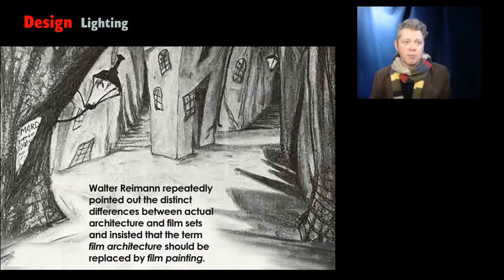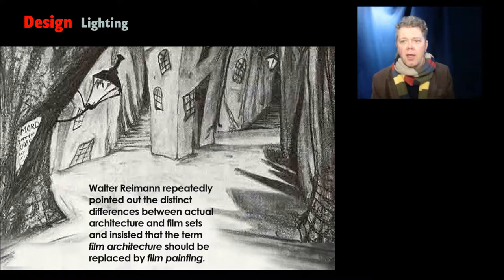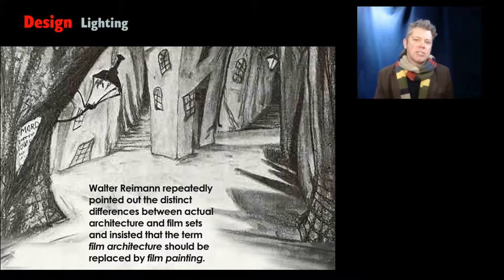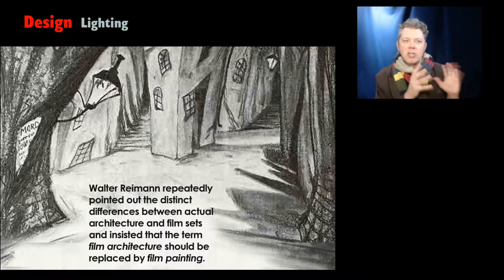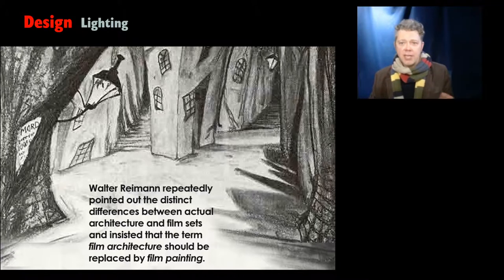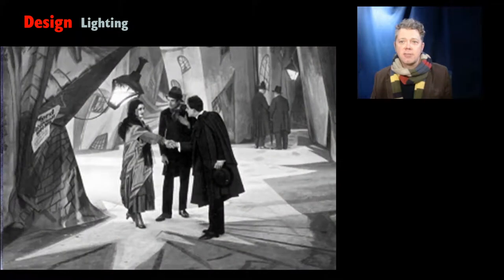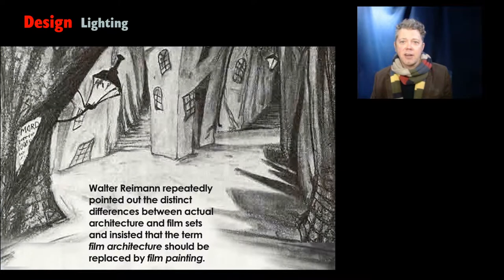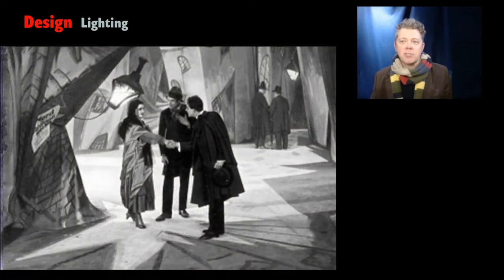My favorite example in cinema history of the pre-production process realized on screen is The Cabinet of Dr. Caligari. The production designer Walter Reimann repeatedly pointed out the distinct differences between actual architecture and film sets, insisting the term 'film architecture' should be replaced by 'film painting,' because he felt film was like moving paintings. Check out Reimann's production art and it looks very nearly identical to what was realized on the set of Caligari — and Tim Burton's work is heavily influenced by it.